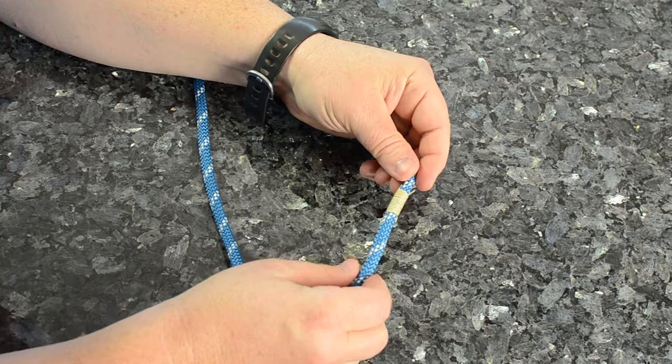Then all I do is simply trim off the excess at the end. I didn't have my knife with me, so I used scissors. There you have the whipped end of a rope.